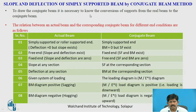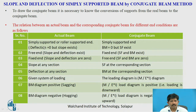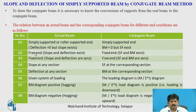To draw a conjugate beam, it is necessary to know the conversion of supports from the real beam to conjugate beam. If the real beam has simply supported or roller supported condition, it will be simply supported in the conjugate beam. Whereas a free end in the actual beam will be a fixed end in the conjugate beam, and a fixed end in the real beam will be a free end in the conjugate beam.